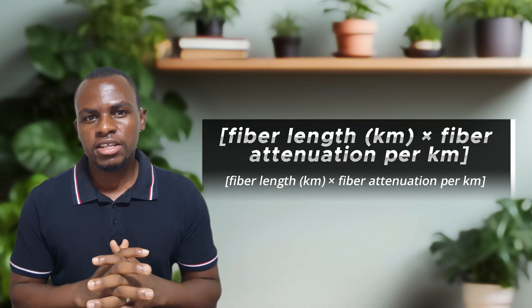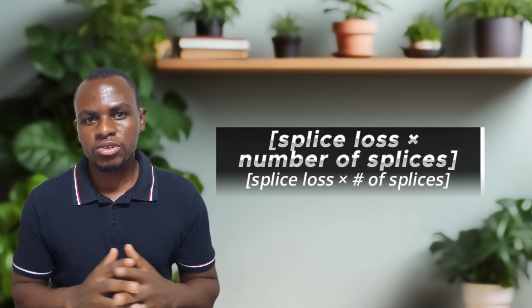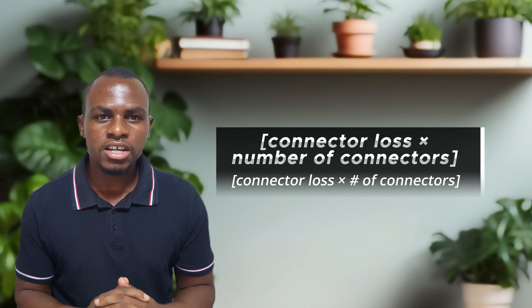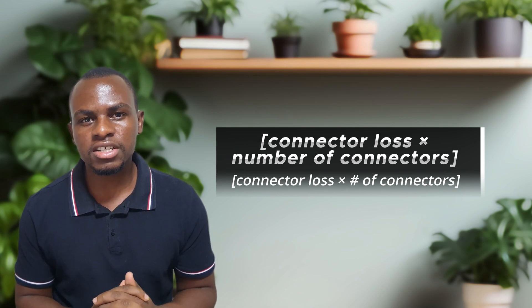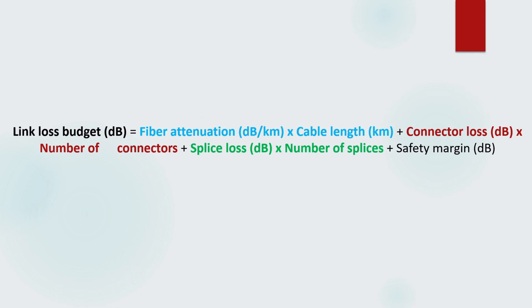To calculate the link loss budget, we need the following parameters: the length of the fiber and its attenuation coefficient, the splice loss and the number of splices in the link, the connector loss and total number of connectors in the link, and the safety margin. It is important to calculate the link loss budget to ensure that the transmitted signal is strong enough to be detected by the receiver, but not too strong to overwhelm it. And here is the formula to calculate the link loss budget.